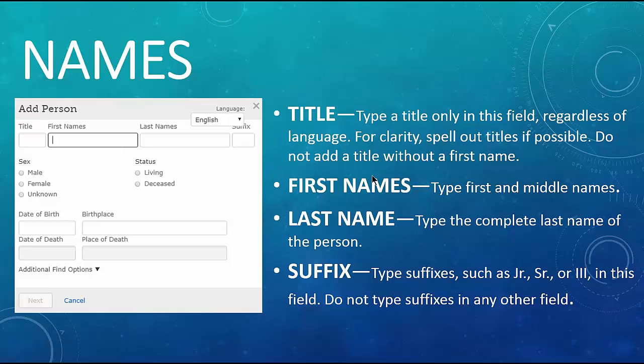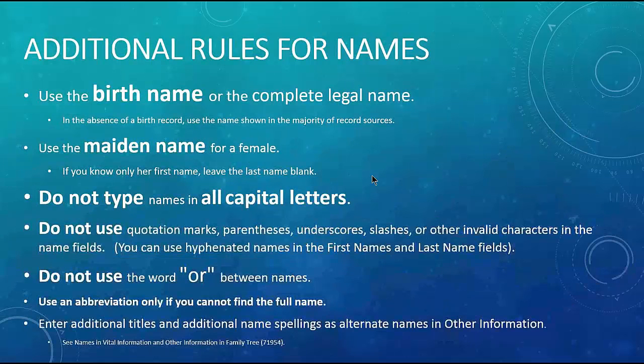Sometimes people are afraid to make changes, like they think people will get mad at them. My husband has an uncle who comes to family reunions and says there's a problem in there, and I say fix it — that's the benefit of it. We all work together so we can fix it. If you have more information than somebody else, go ahead and add that information. If you have a record that says more about something, go in and add it. And so I'm going to show you how we do that.